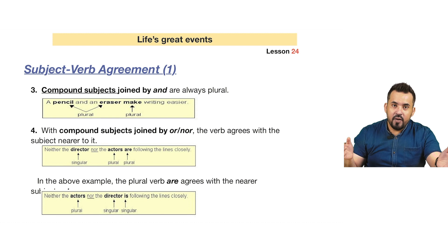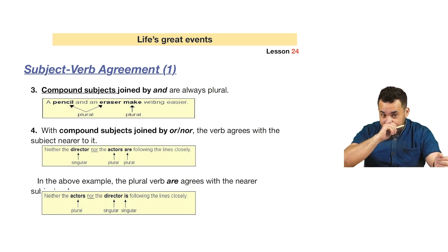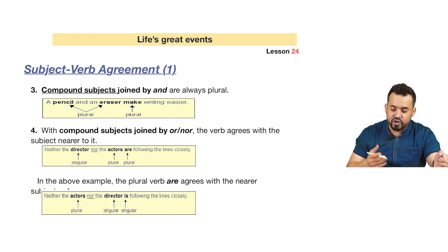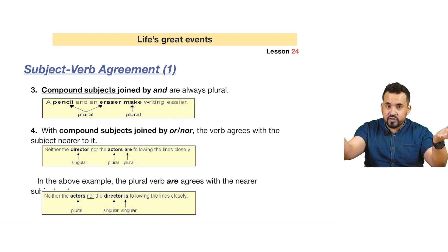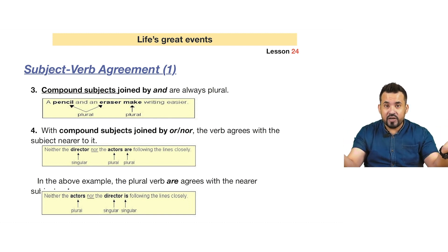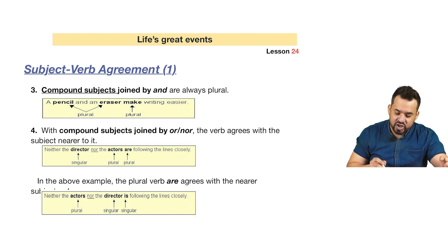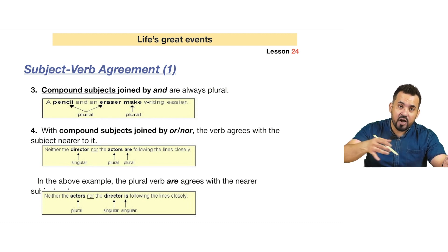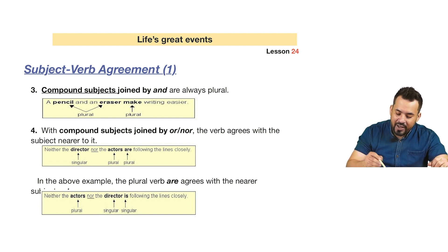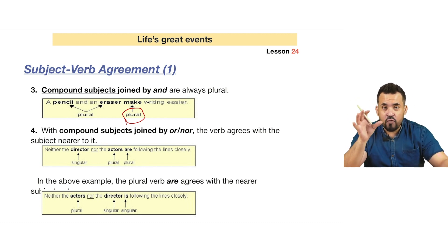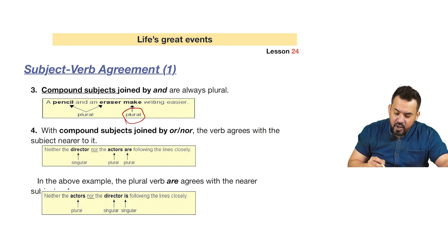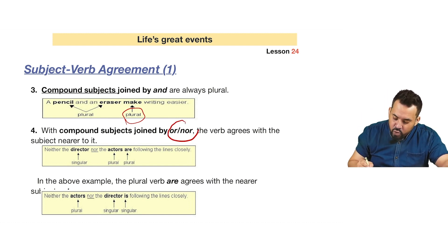Rule number three: subject-verb agreement with compound subjects joined by 'and.' When two subjects are joined by 'and,' the subject becomes plural because we have one subject and another, making it plural. So the verb must be plural. For example, 'a pencil and an eraser make writing easier' — 'make' is plural because there are two subjects.